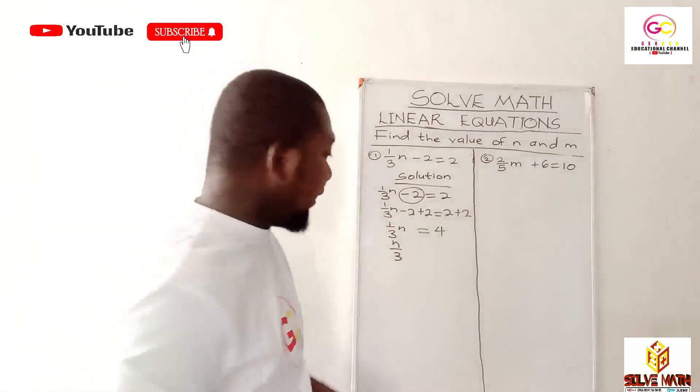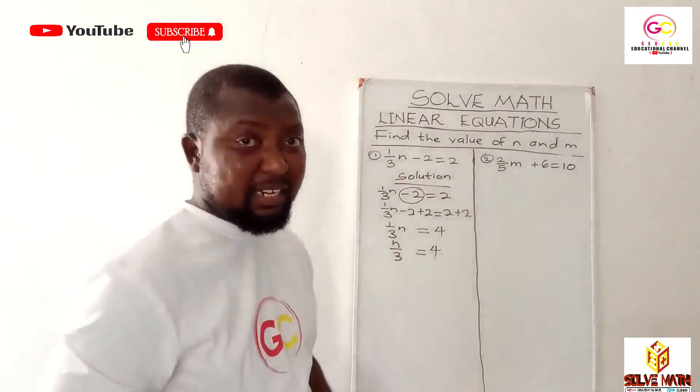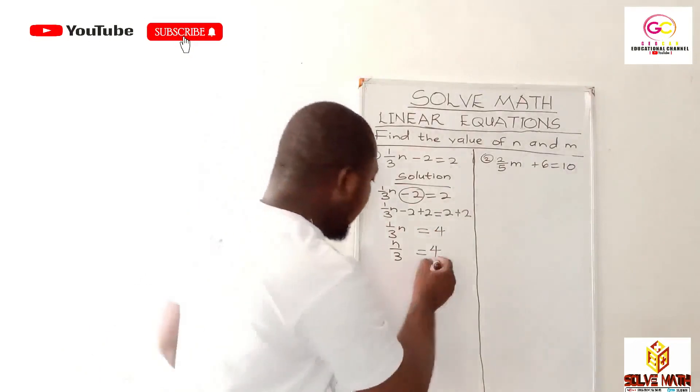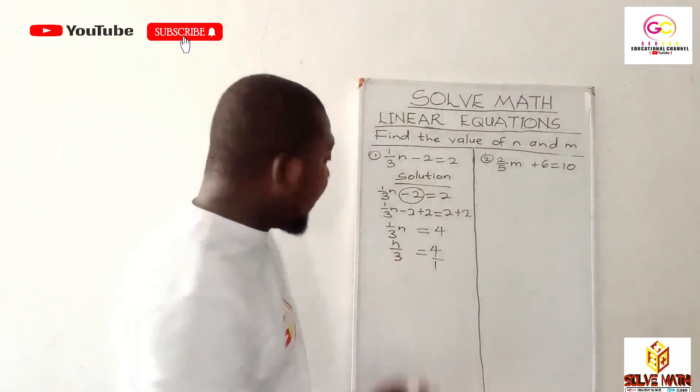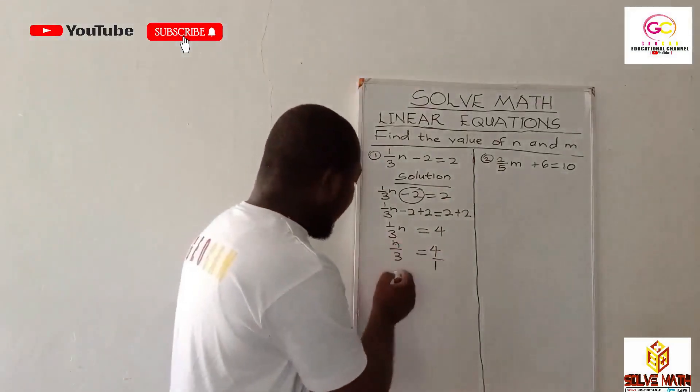We'll be cross multiplying. So you have n/3 = 4. Now four standing alone is the same as 4/1. Five is the same as 5/1, six is the same as 6/1. We're doing that in order to make our cross multiplication easier and simple.